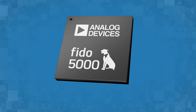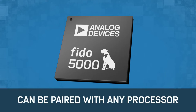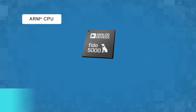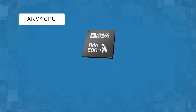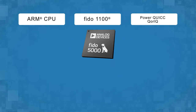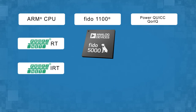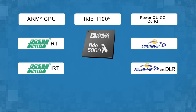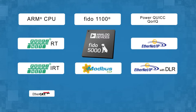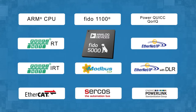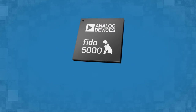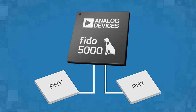The FIDO 5000 REM switch can be paired with any processor, including any ARM CPU, FIDO 1100, or any other CPU, and supports Profinet RT and IRT, Ethernet IP with beacon-based DLR, Modbus TCP, EtherCAT, Circos, and Powerlink — all in a single silicon solution. The REM switch is an industry first.